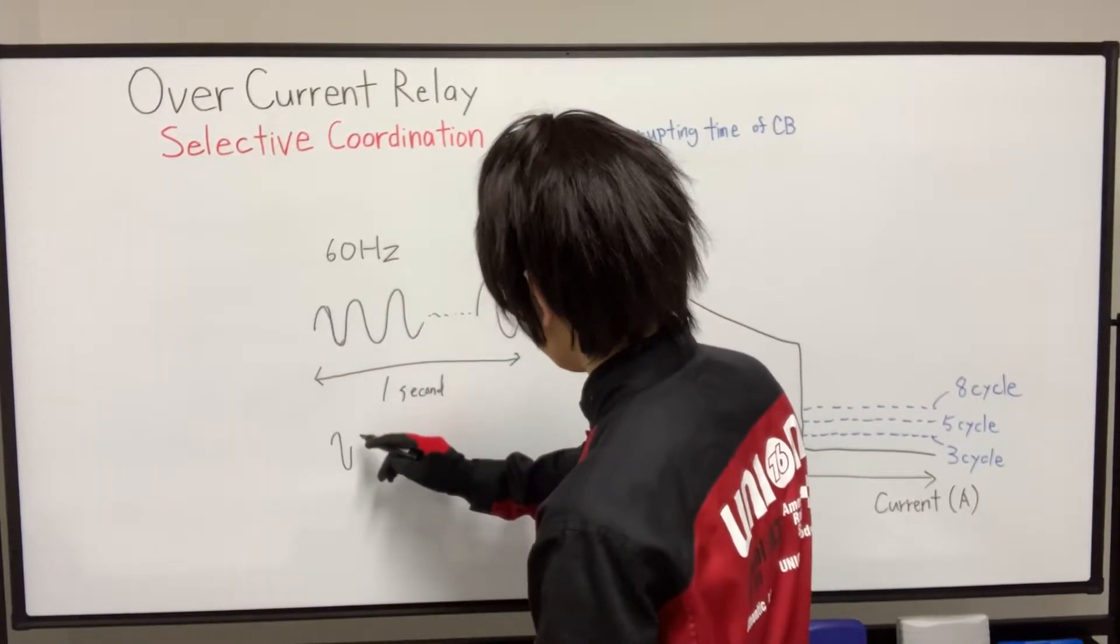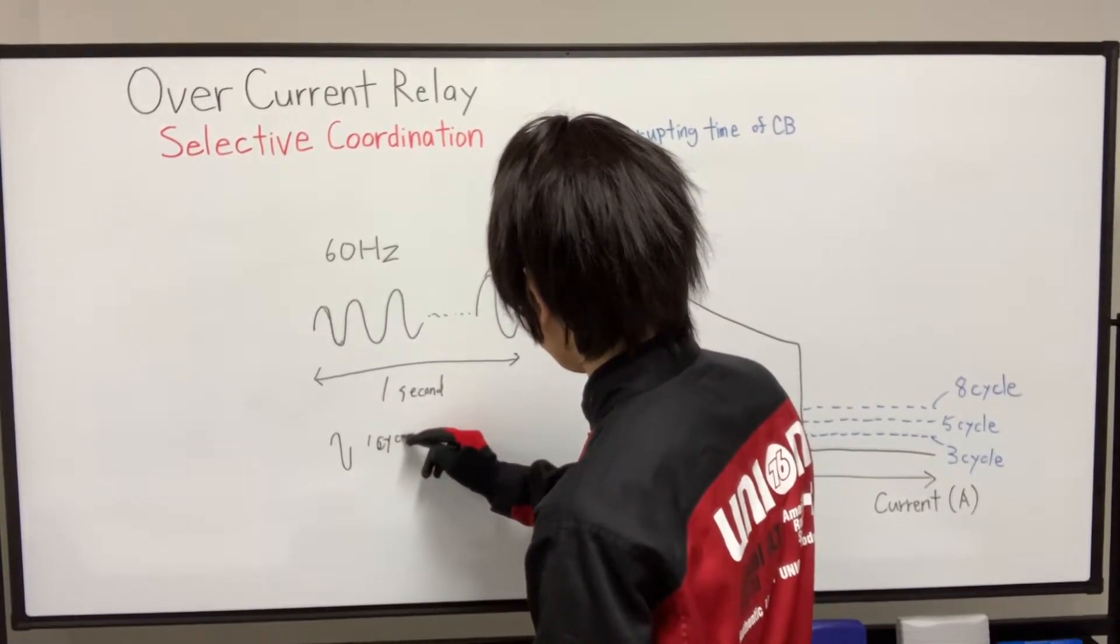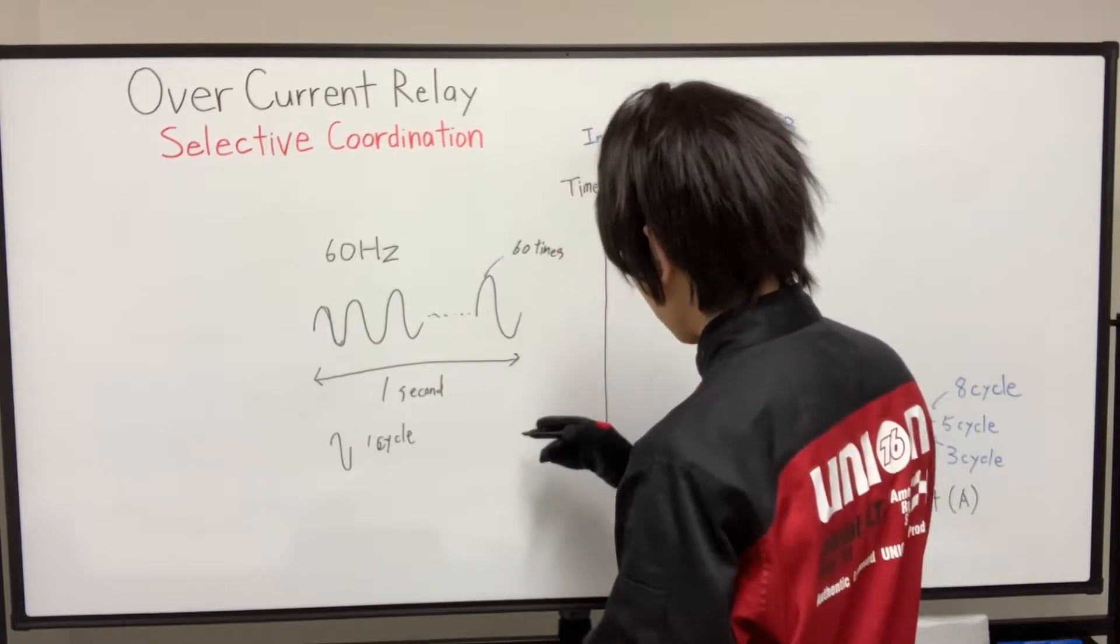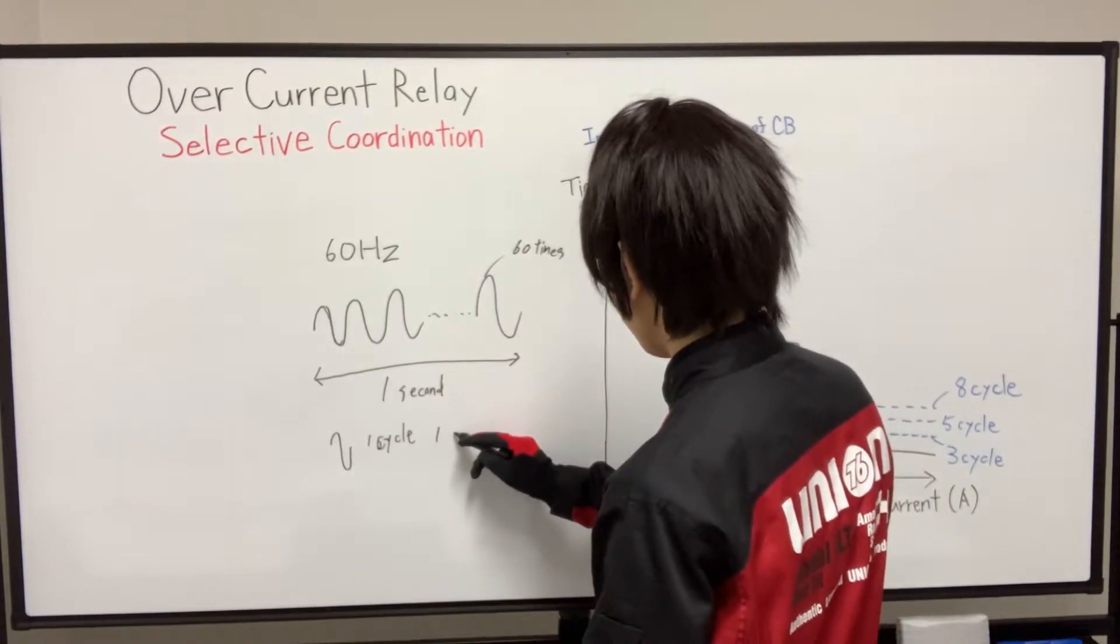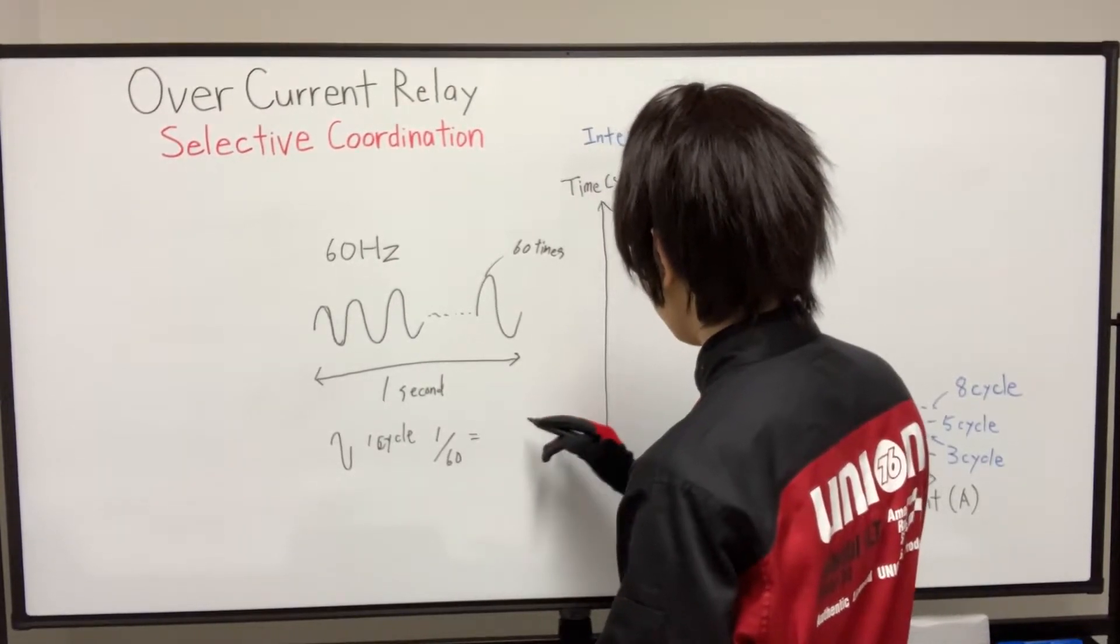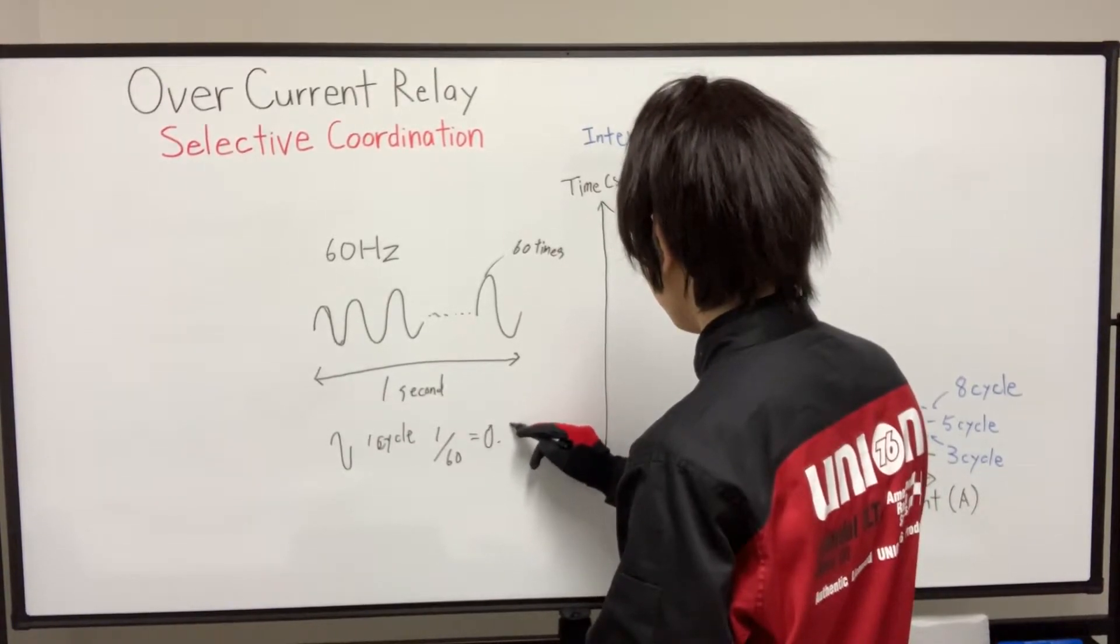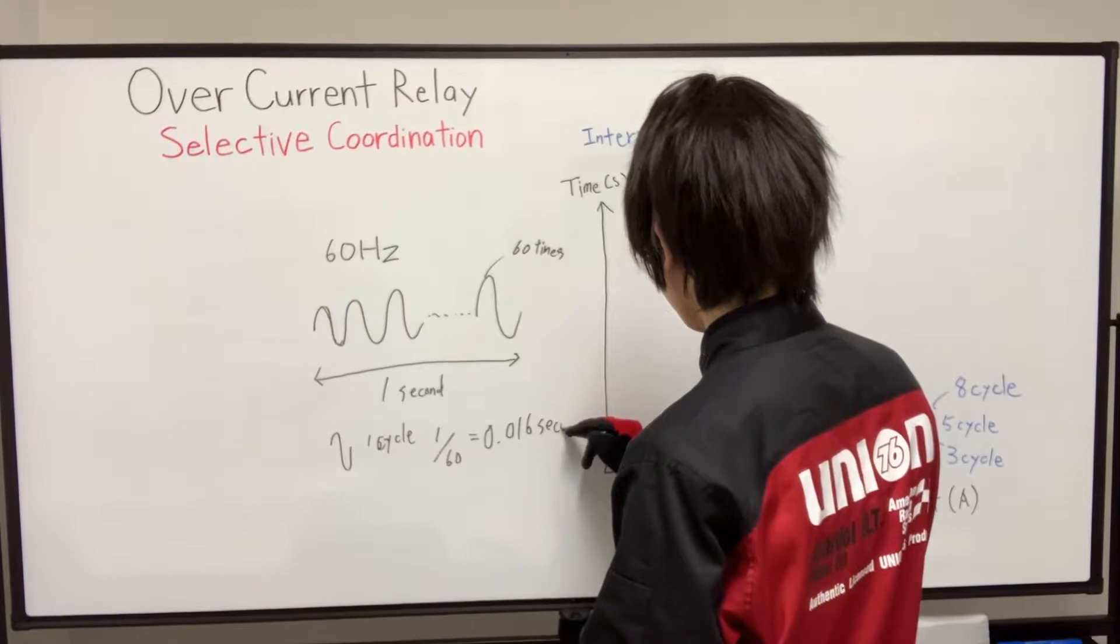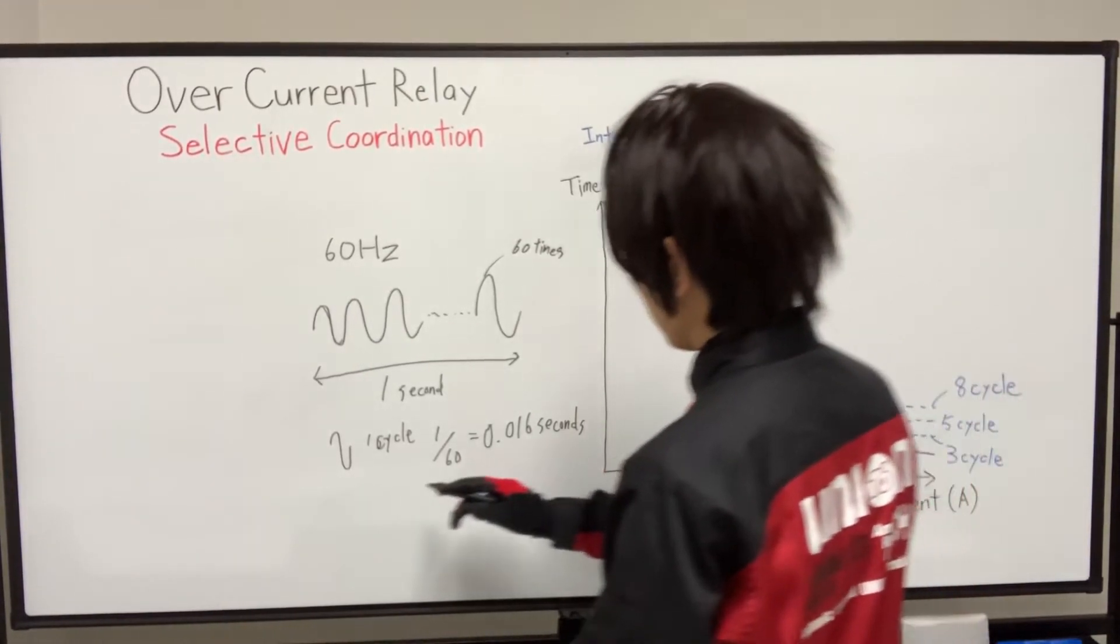And two cycles takes time in 60 Hz of 1 divided by 60, that is approximately 0.016 seconds.